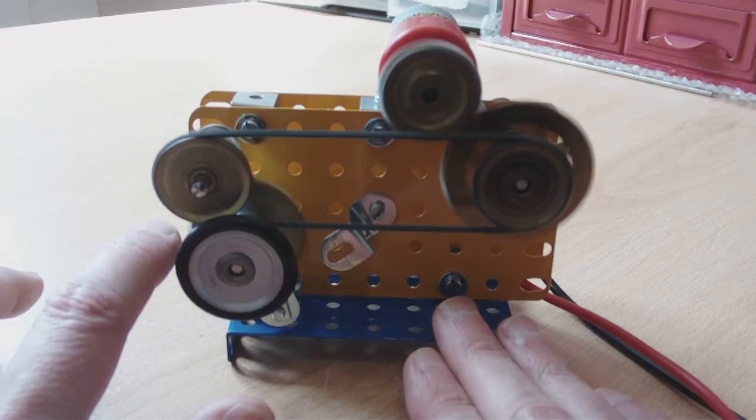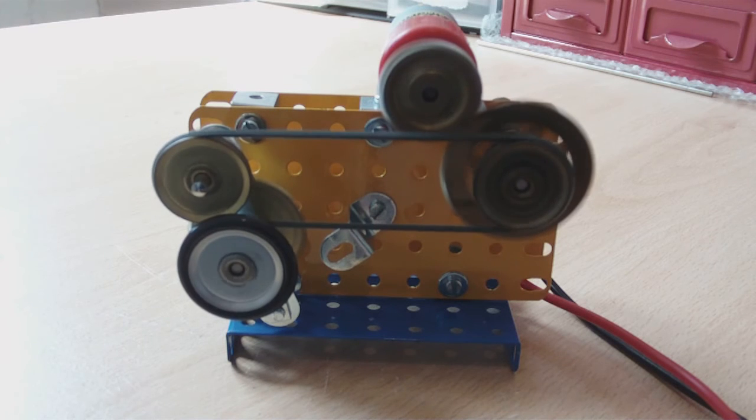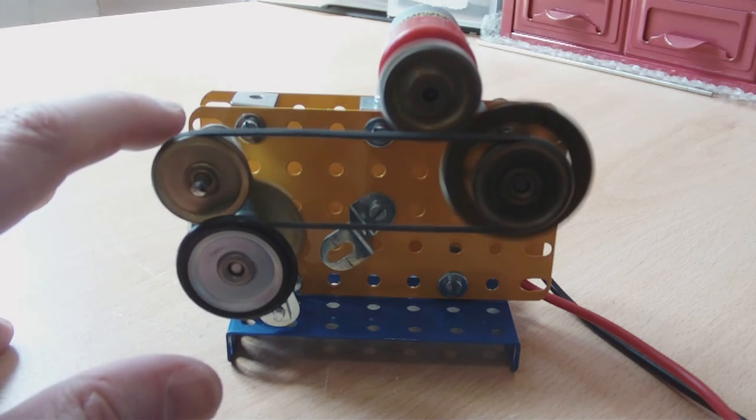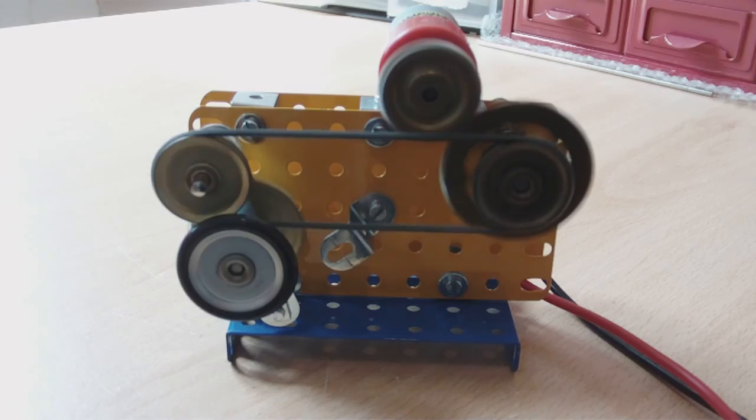The way it works is that there is a sun gear here and a planet gear here. As the tension increases or the load increases, the planet gear tends to climb around the sun gear. And that's what you saw earlier on.